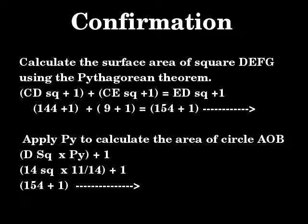Apply Pi to calculate the area of circle AOB. D squared times Pi plus 1. 14 squared times 11 over 14 plus 1 equals 154 plus 1 which is 155.